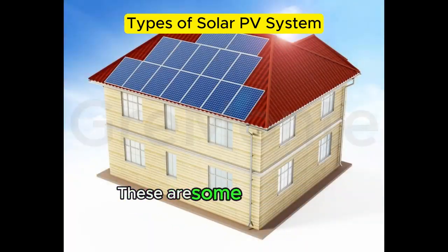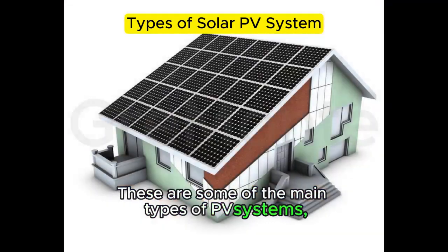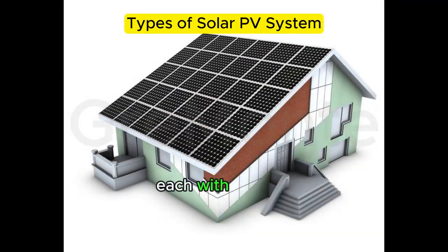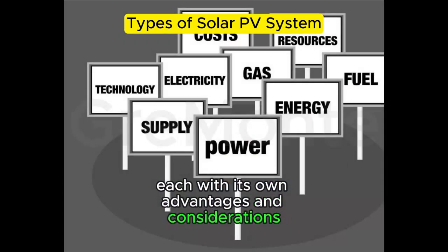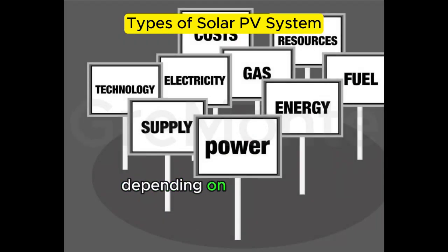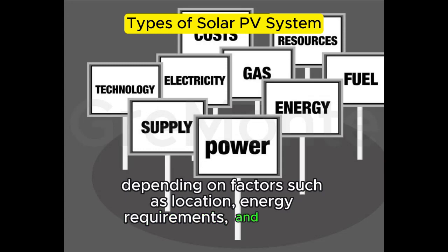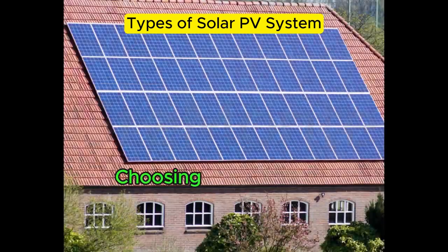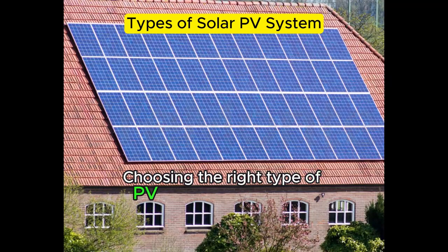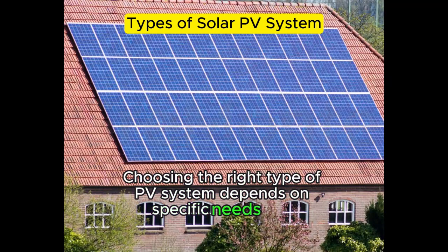These are some of the main types of PV systems, each with its own advantages and considerations, depending on factors such as location, energy requirements, and budget. Choosing the right type of PV system depends on specific needs and circumstances.